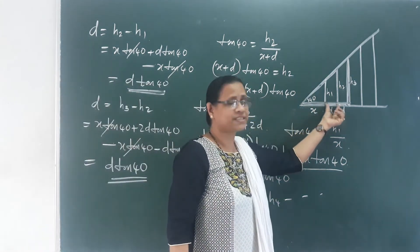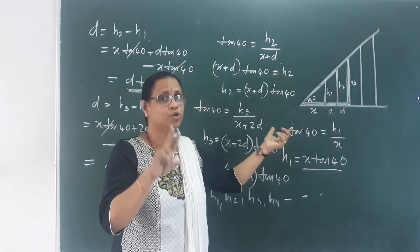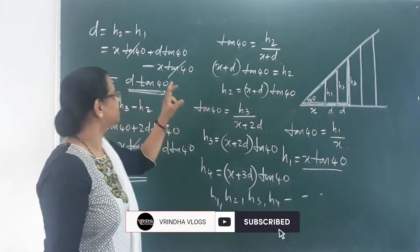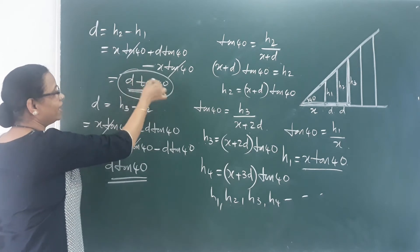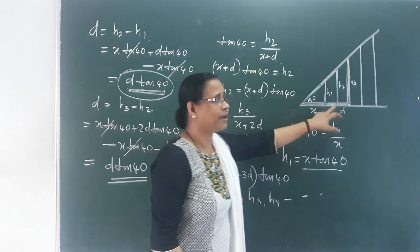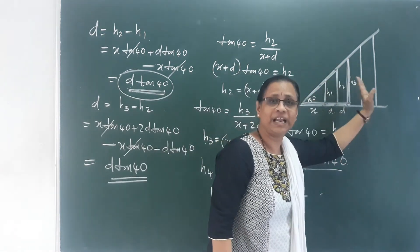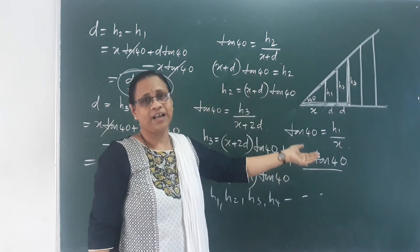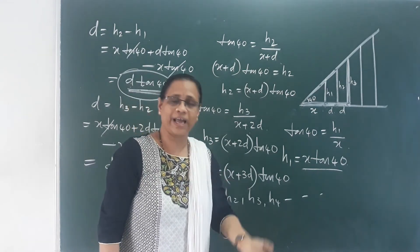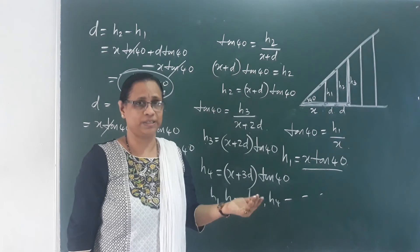If d equals 1 cm, the common difference is 1·tan 40; if d equals 2, it is 2·tan 40. Generally the common difference is d·tan 40. Therefore all the perpendicular heights are in arithmetic sequence with common difference d·tan 40.